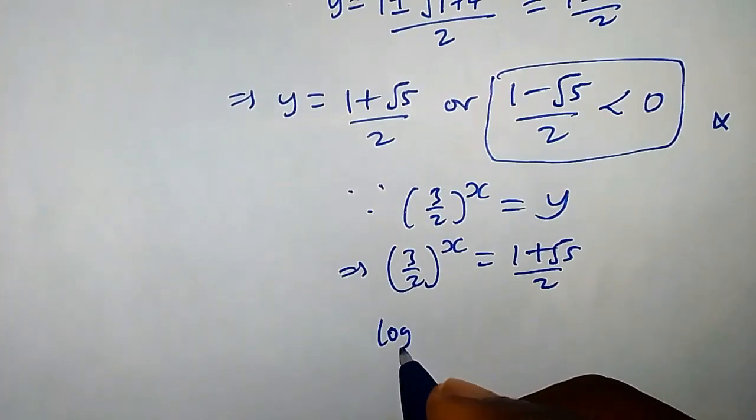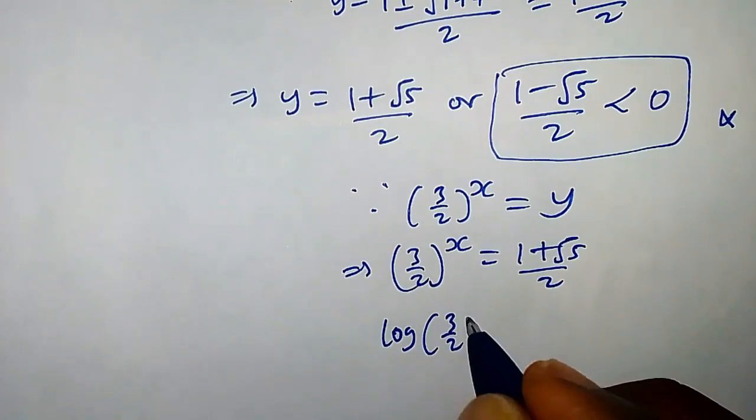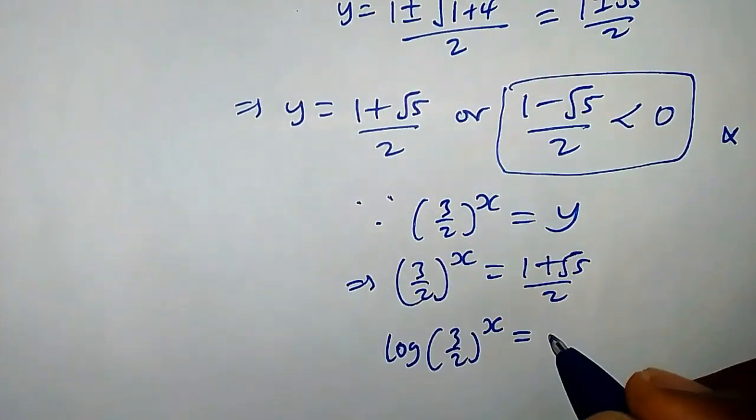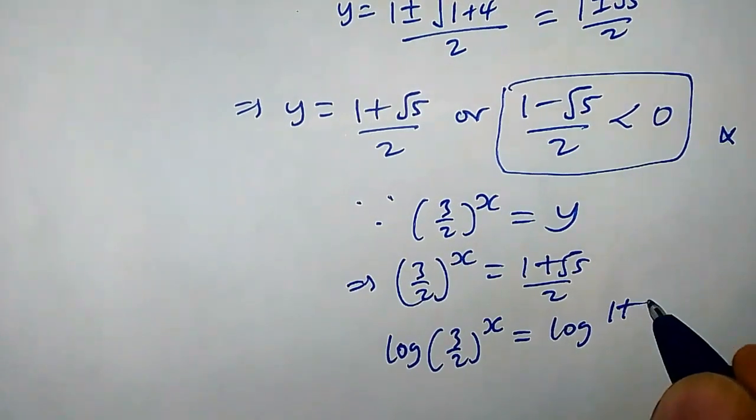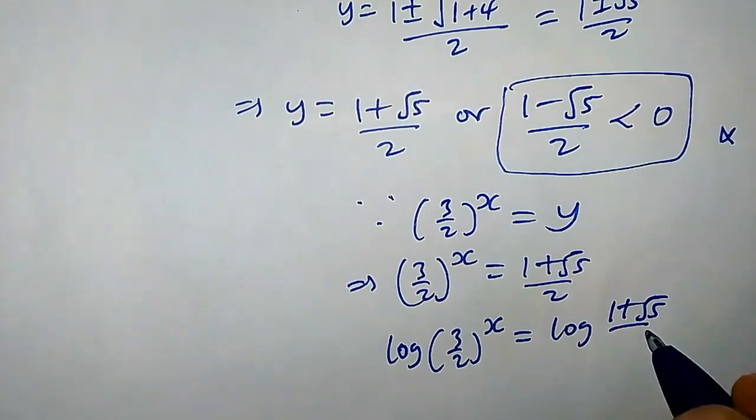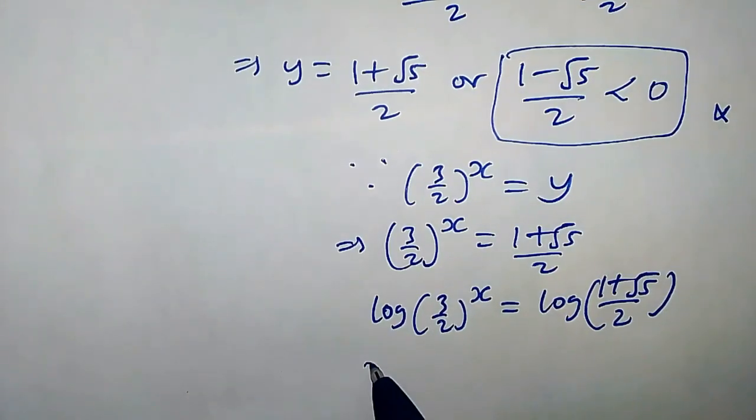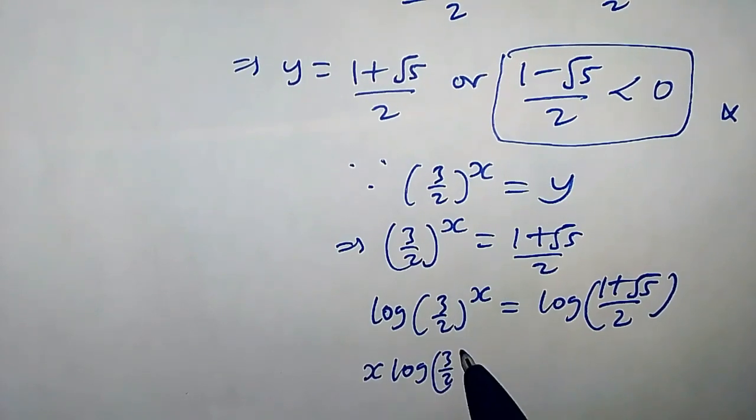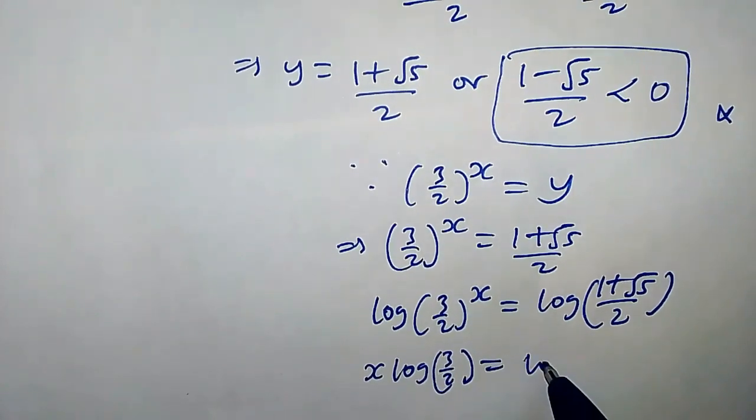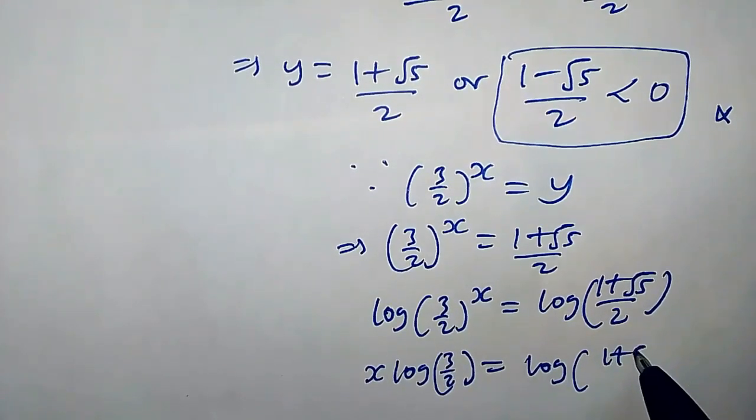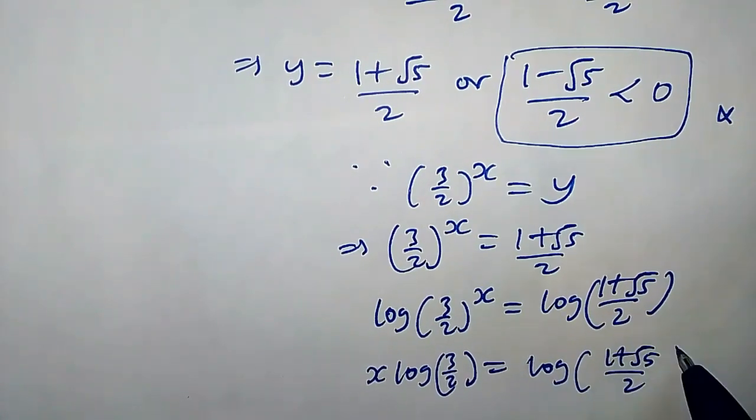Taking the natural log of both sides, we have log(3/2)^x equals log((1 plus √5)/2). This can be rewritten as x times log(3/2), which equals log((1 plus √5)/2).